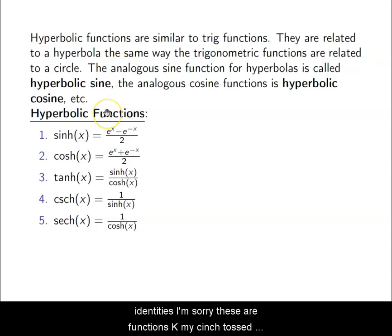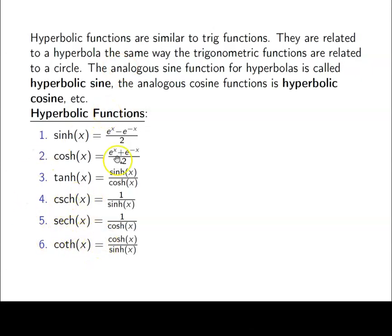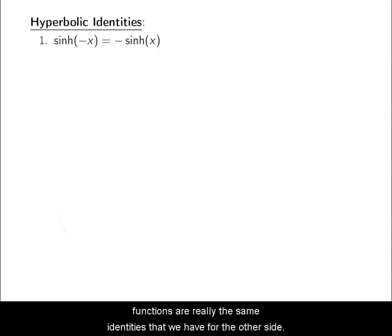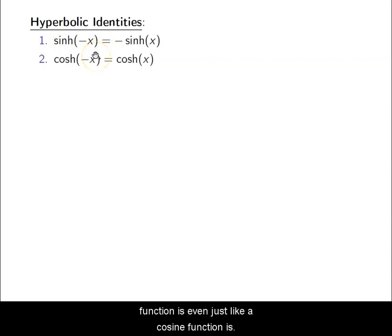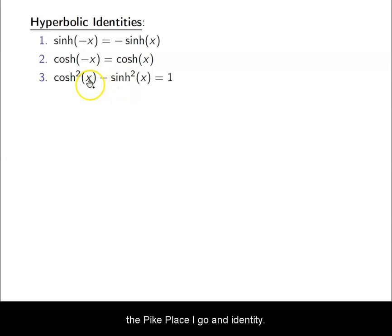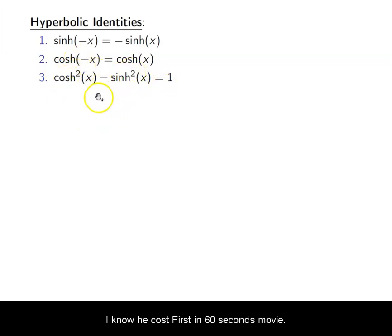Now that we have cinch, cosh, tanh, cosecanch, secanch, and coth, we can discuss the identities. The cinch function is odd, just like sine is odd. The cosh function is even, just like cosine is even. Cosh squared minus cinch squared equals one — note that unlike the Pythagorean identity for trig, here we subtract the two terms, with cosh first and cinch second.